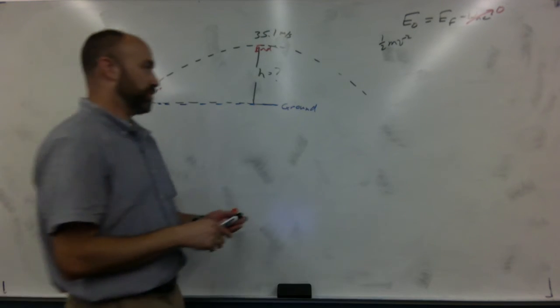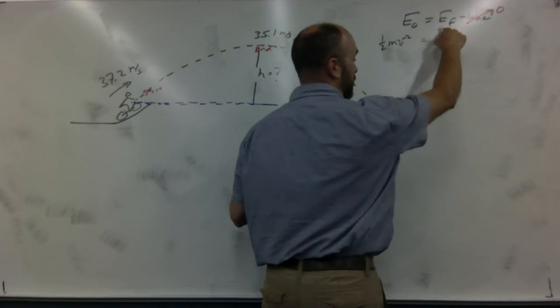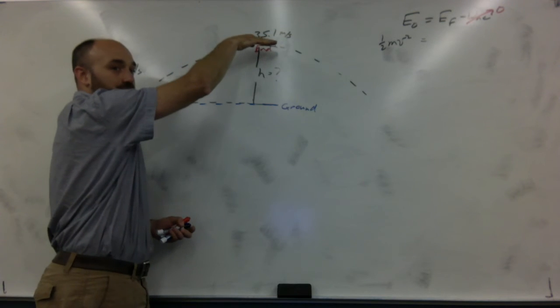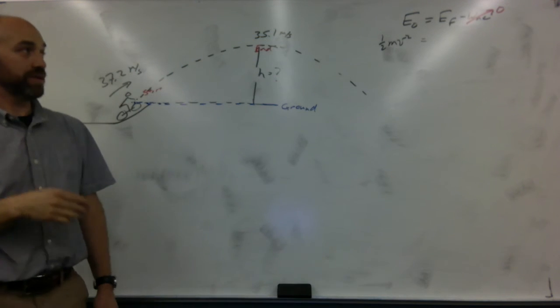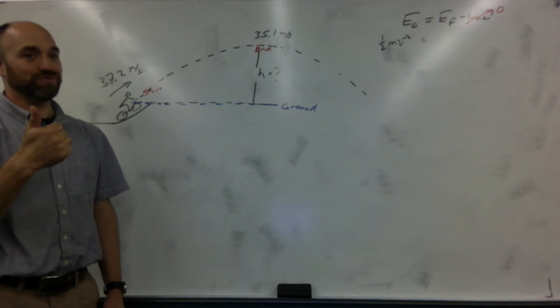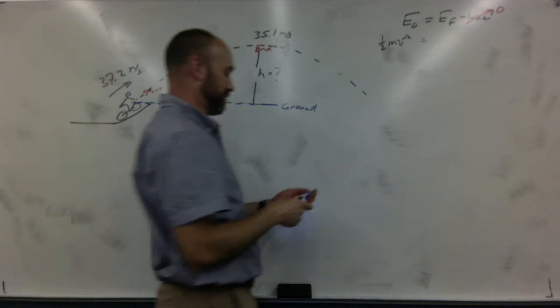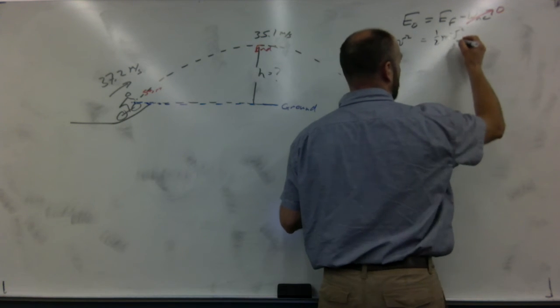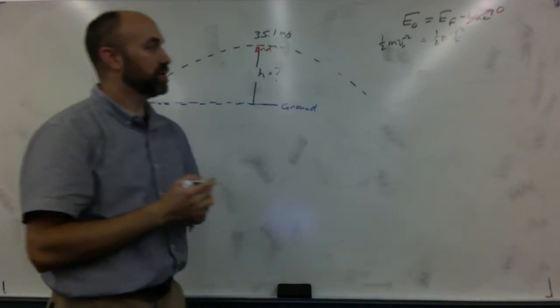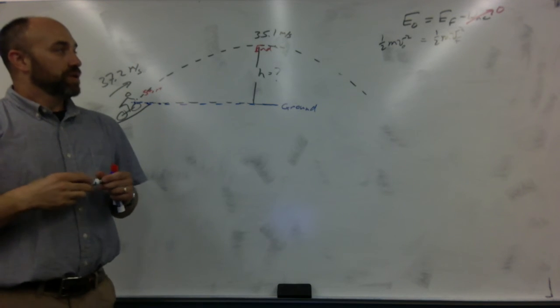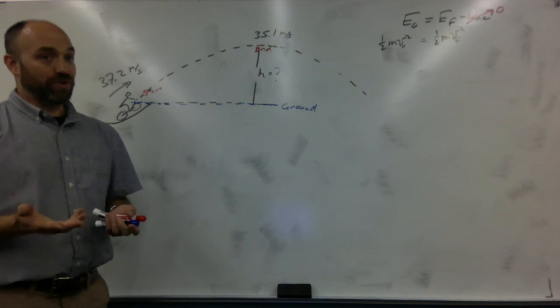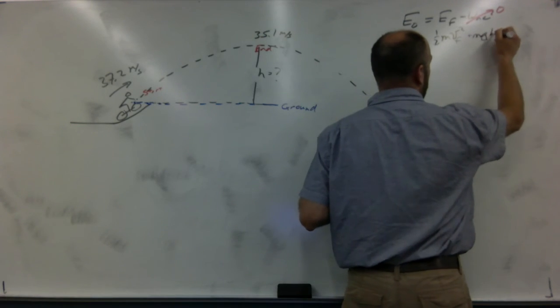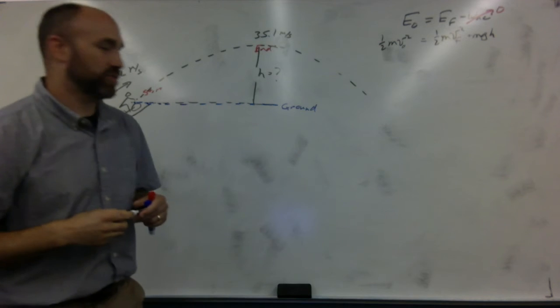So now we go to the final situation. Now this motorcycle driver is flying through the air, and they're up here. And is the motorcycle driver moving? Yes. So we've got kinetic energy. So we're going to have one half m V squared, but now this is V final. This one was V initial. Is the motorcycle driver off the ground? Yep, so now we have M G H. And there's still no springs involved.